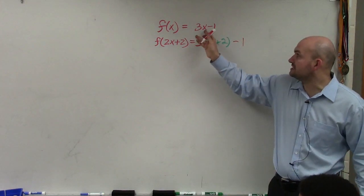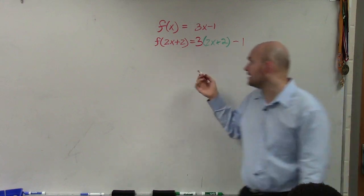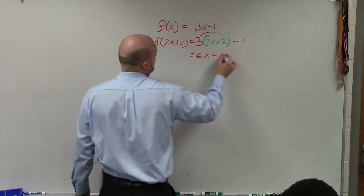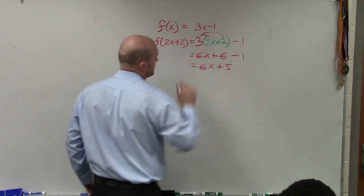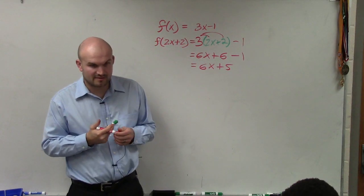So do you guys see how I replaced x with 2x plus 2, which is my input value? Then I apply the distributive property and simplify. So then my final value is going to be 6x plus 5.